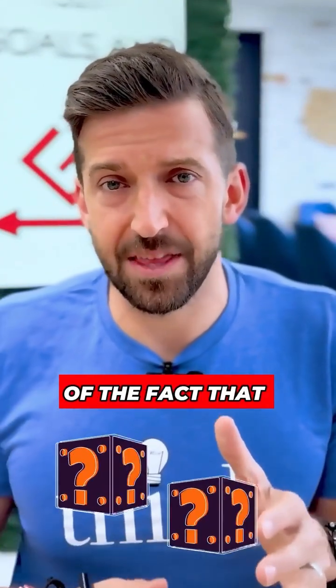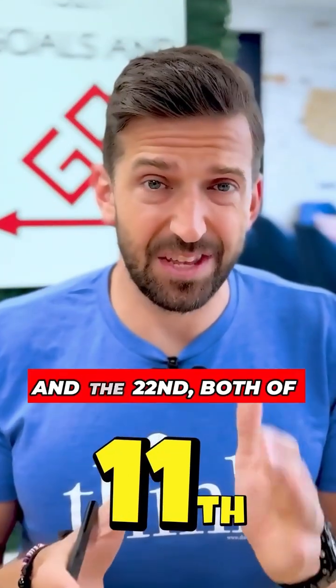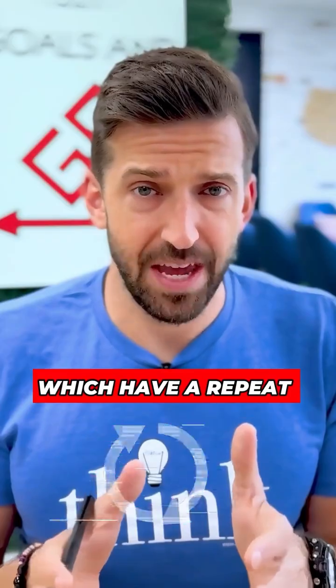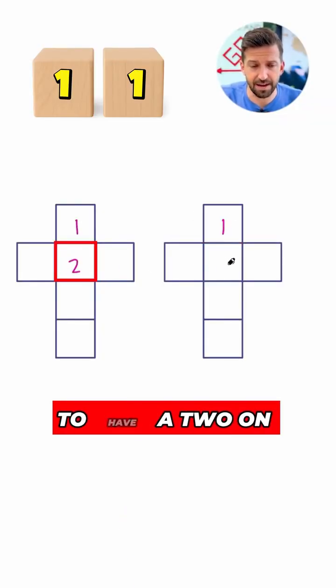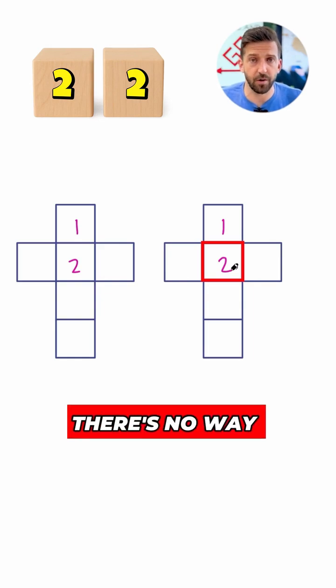For starters, I think of the fact that we've got dates like the 11th and the 22nd, both of which have a repeat digit. So that means I'm simply going to have to have a one on both cubes and I'm going to have to have a two on both cubes. There's no way around it.